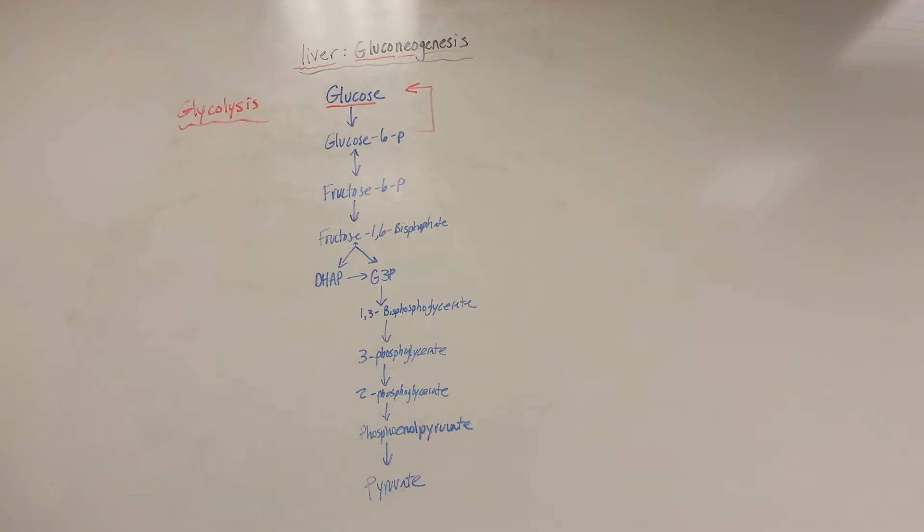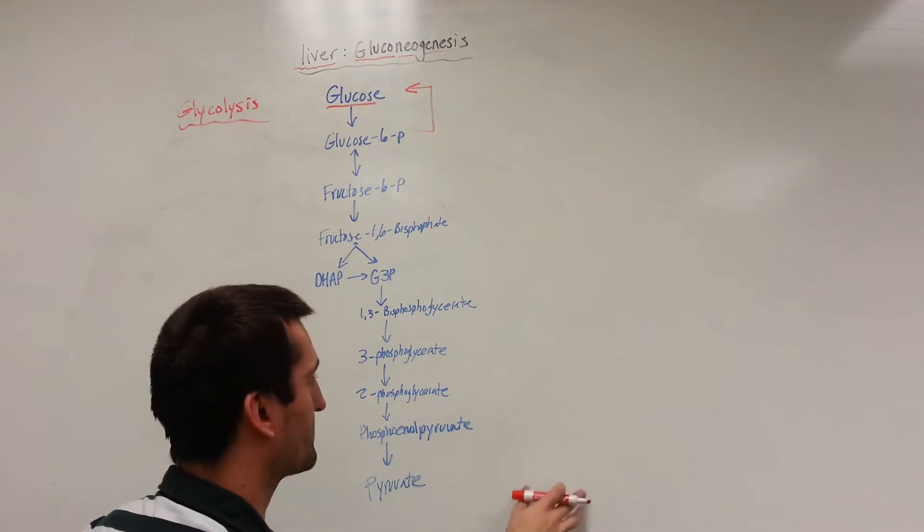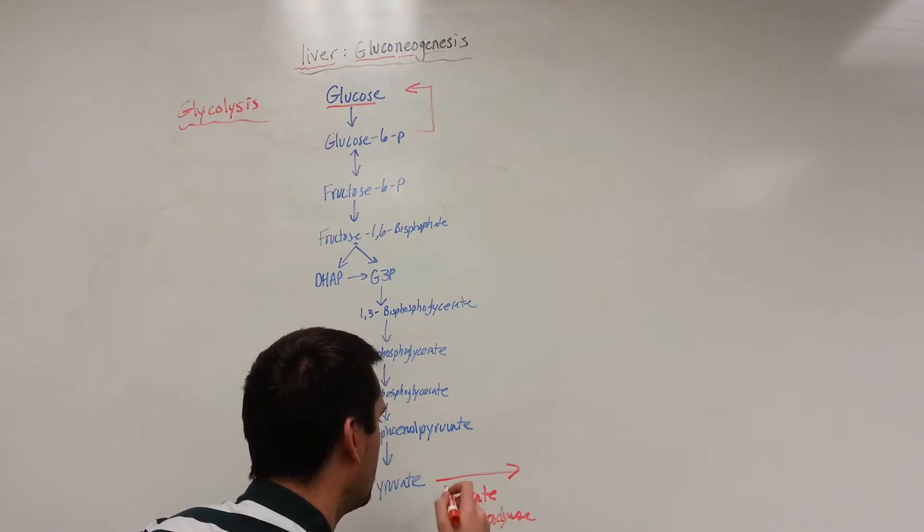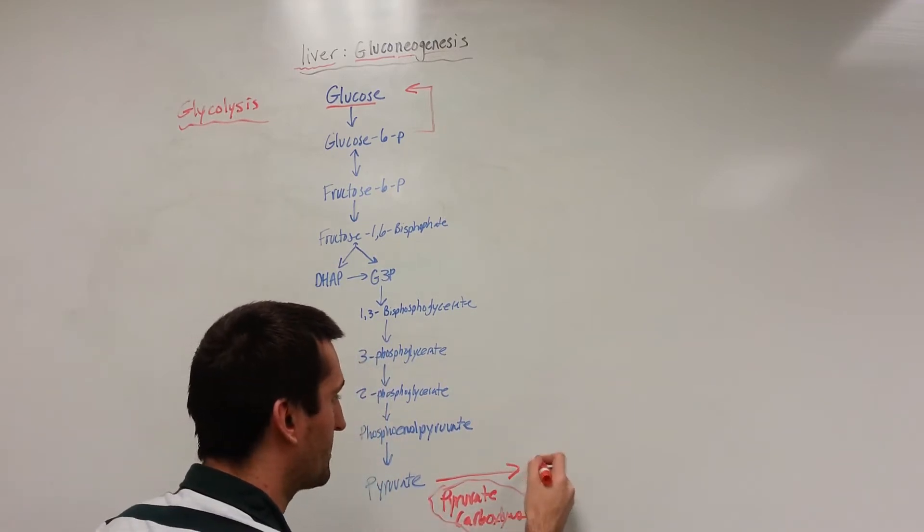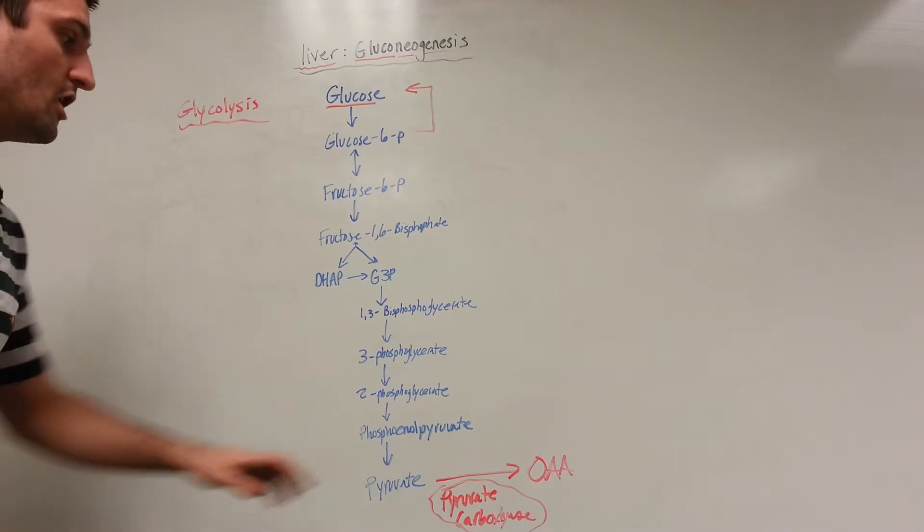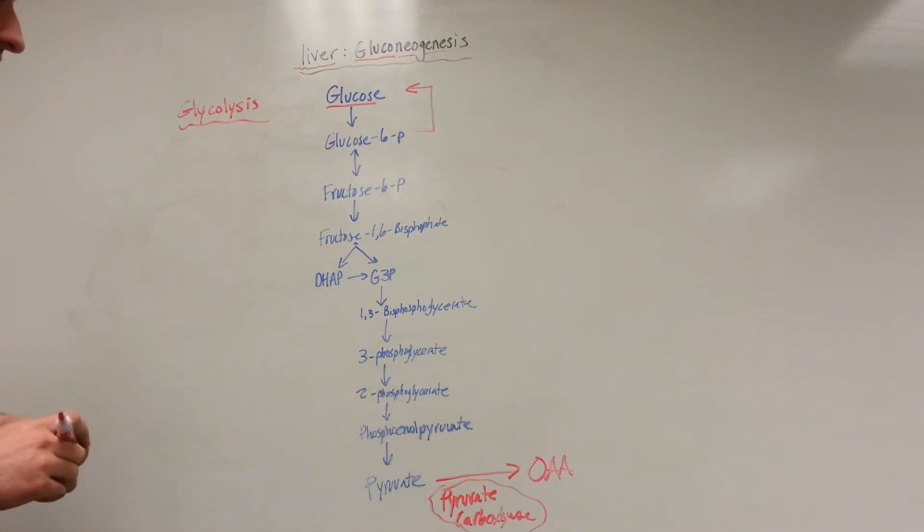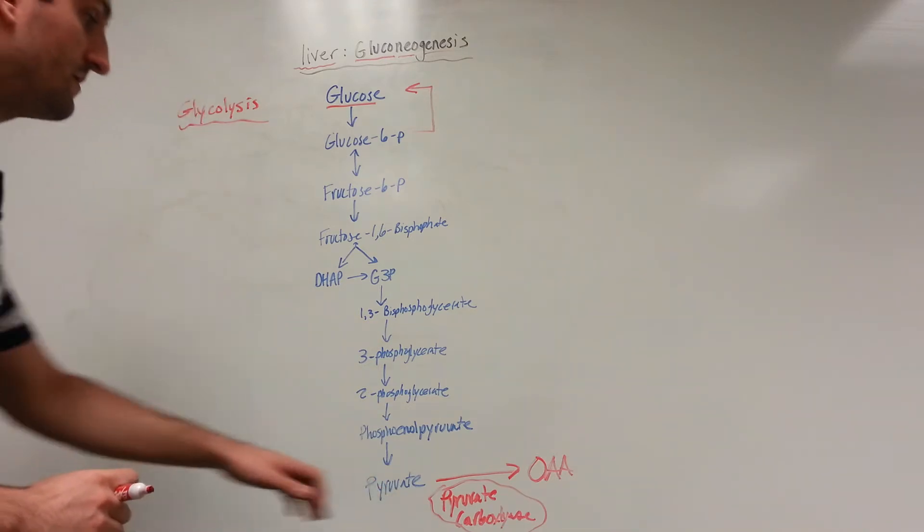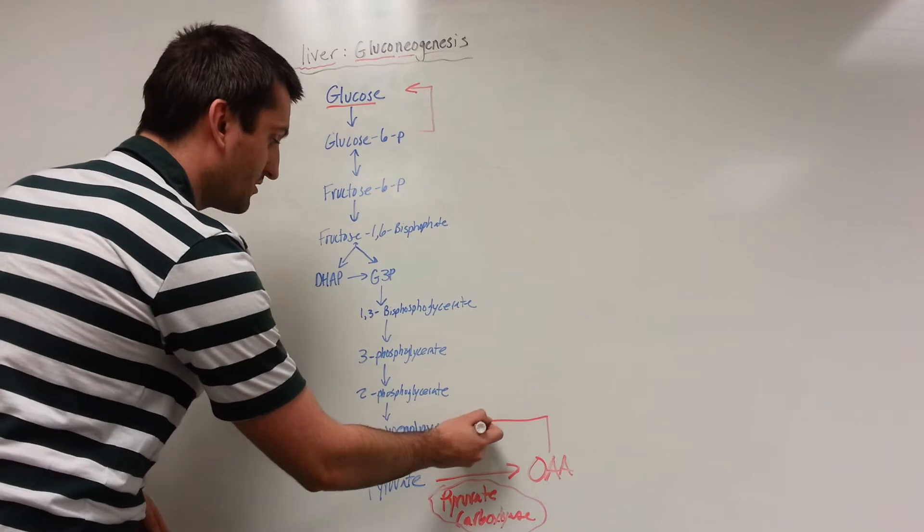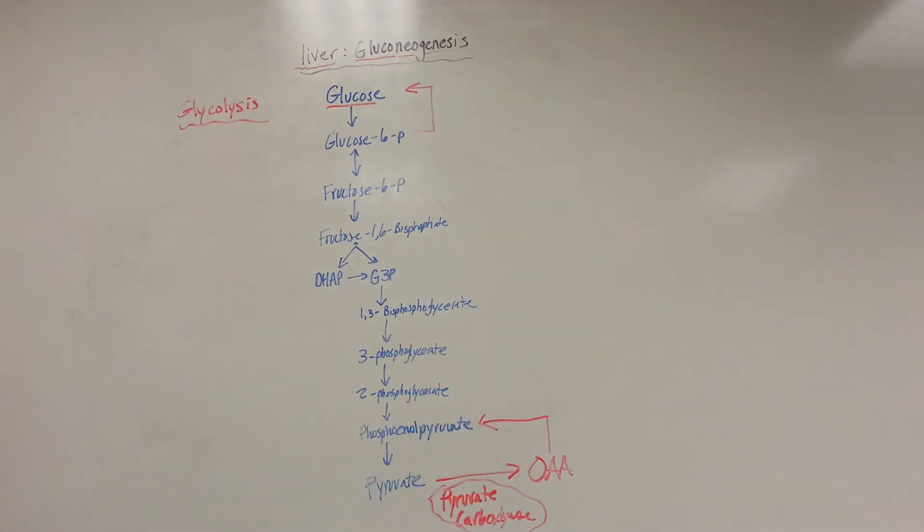Our first enzyme that we're going to need to convert pyruvate is pyruvate carboxylase. I'm going to write all the gluconeogenesis stuff over here on this side. Pyruvate carboxylase is going to form oxaloacetate, OAA. If you recall, OAA is going to be found in the TCA cycle, the Krebs cycle. So pyruvate gets carboxylated into oxaloacetate, and from oxaloacetate we're going to have it turn into PEP, phosphoenolpyruvate.